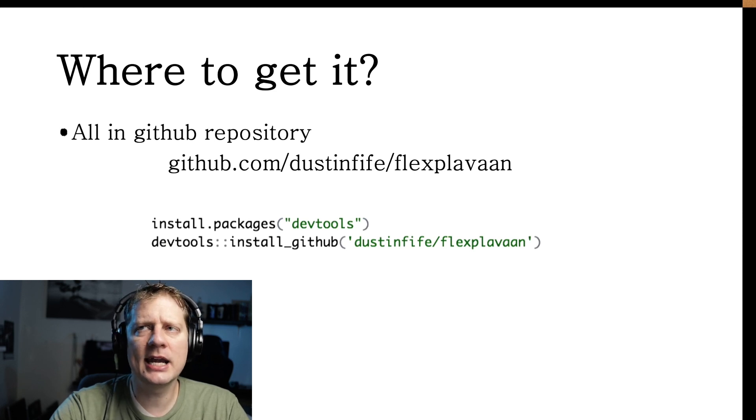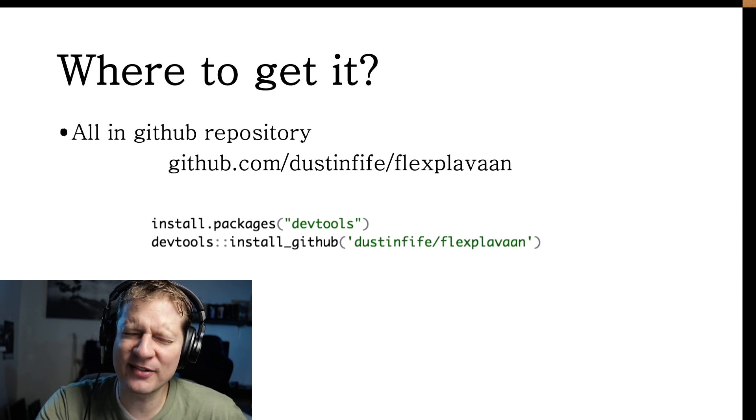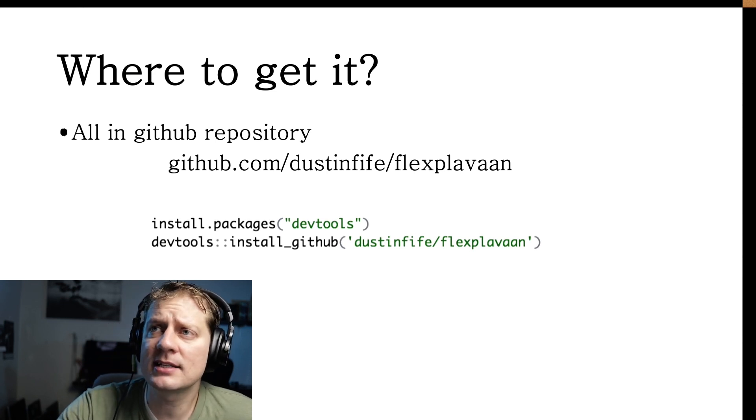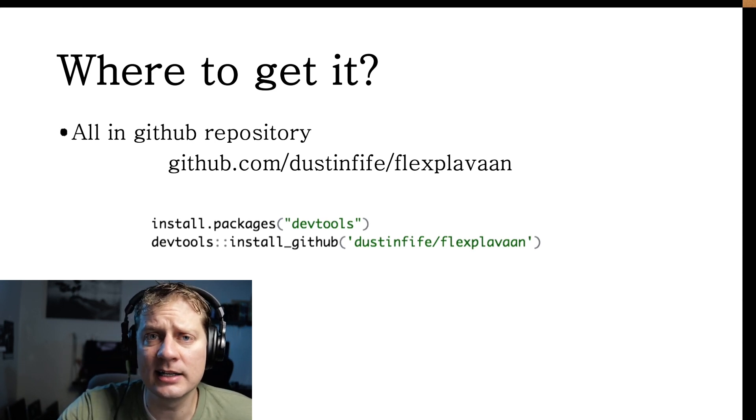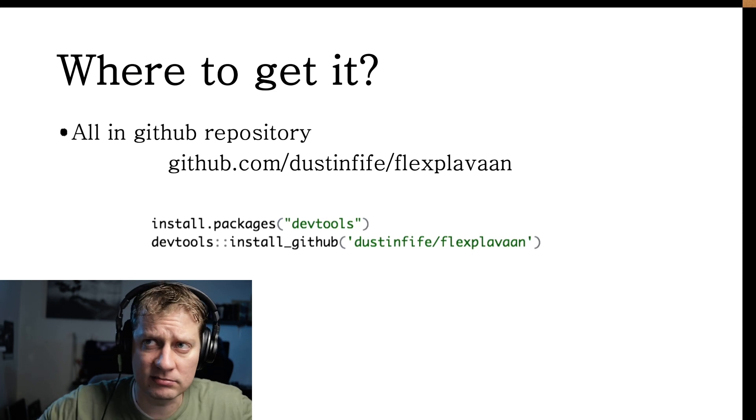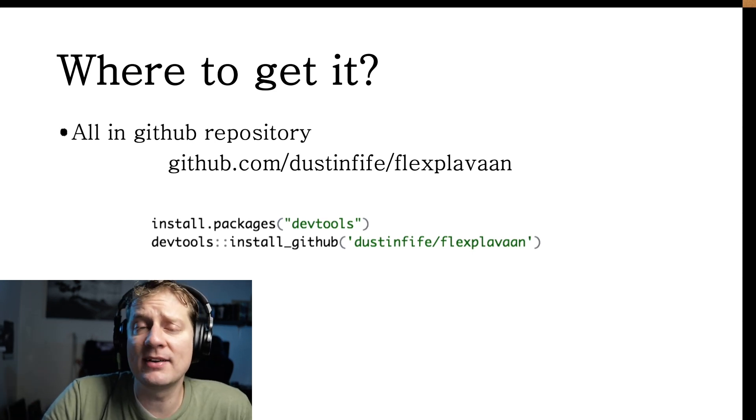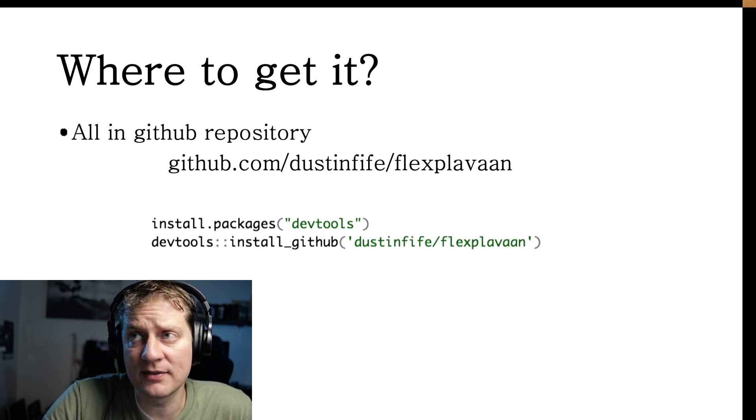So I know you are just dying to know, how do I get FlexPlavon on my machine? Well, for a low cost of absolutely nothing, you can download it from GitHub. Currently, it is not in R's repository. So you have to do some legwork to get it. You got to install the DevTools package. Then from the DevTools package, you can install the FlexPlavon package.